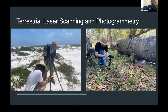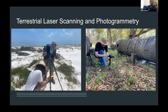Terrestrial laser scanning, for those who aren't familiar, is similar to LiDAR in which a laser range finder sends out a pulse to continually scan the area. Upon bouncing back, an onboard computer calculates distance and intensity values, which allows it to create a 3D model of the environment. Photogrammetry is the use of a camera to take many photos of the surrounding area, in which a specialized program then creates a 3D image from those photos.